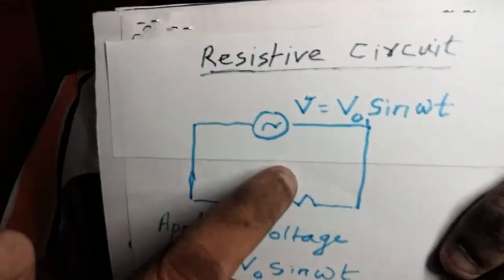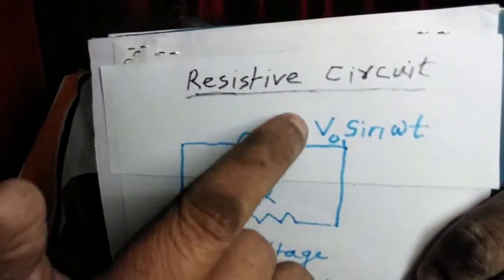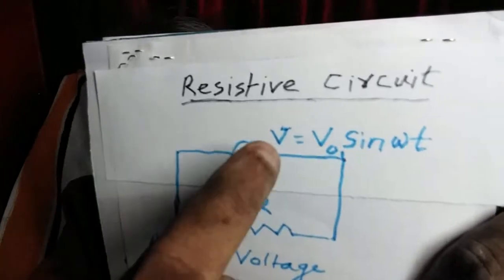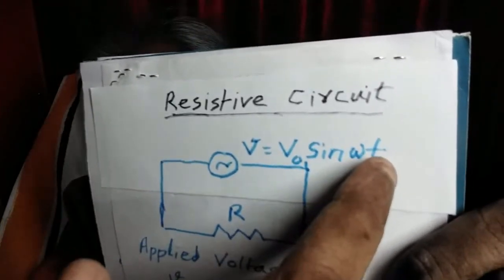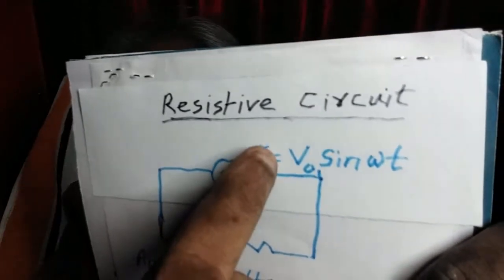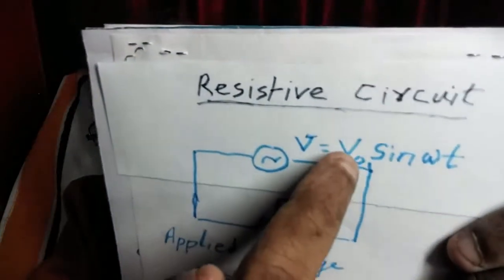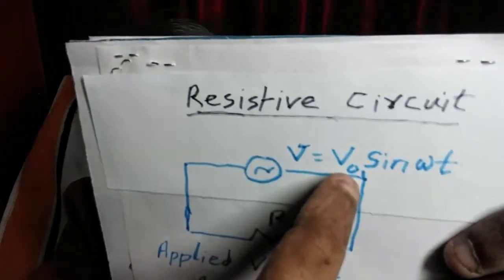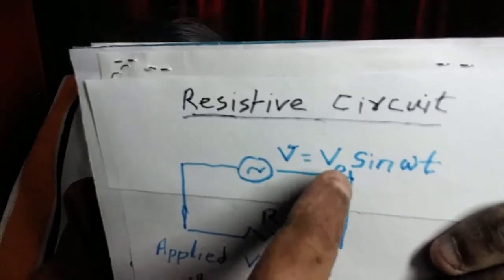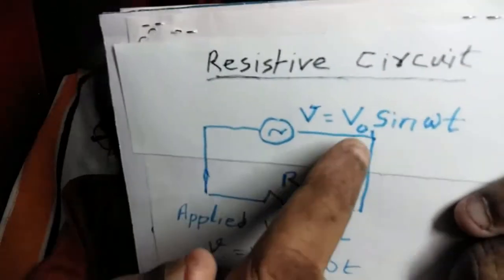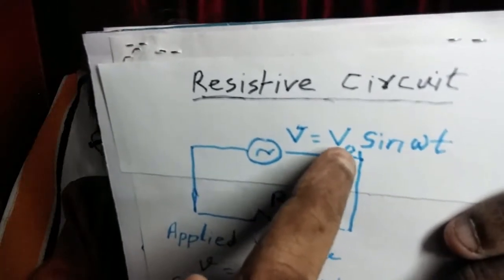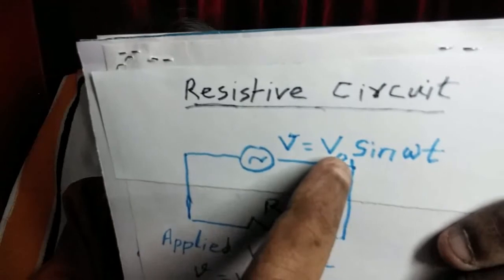R is the resistance. V is a variable because as T changes, the value of V will also change. At every instant V has a certain definite value, so V goes on changing. V is called the instantaneous value of the applied voltage, and that is always represented by the small letter V. V₀ is the peak voltage or maximum voltage available in the circuit from the source. We call it peak voltage, voltage amplitude, or maximum voltage.